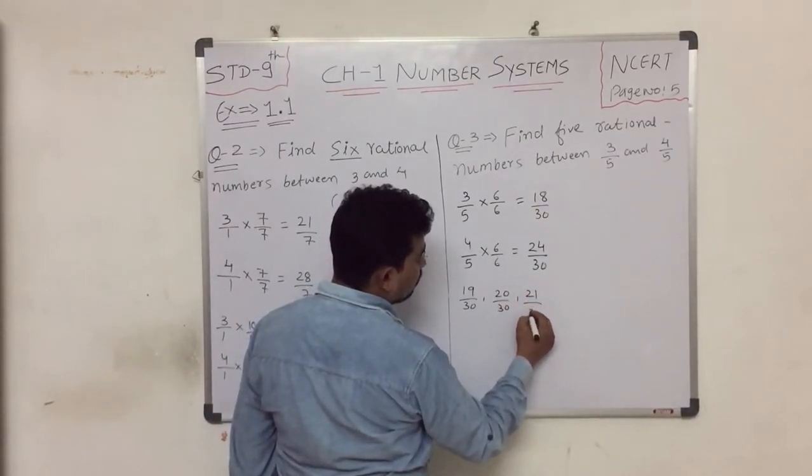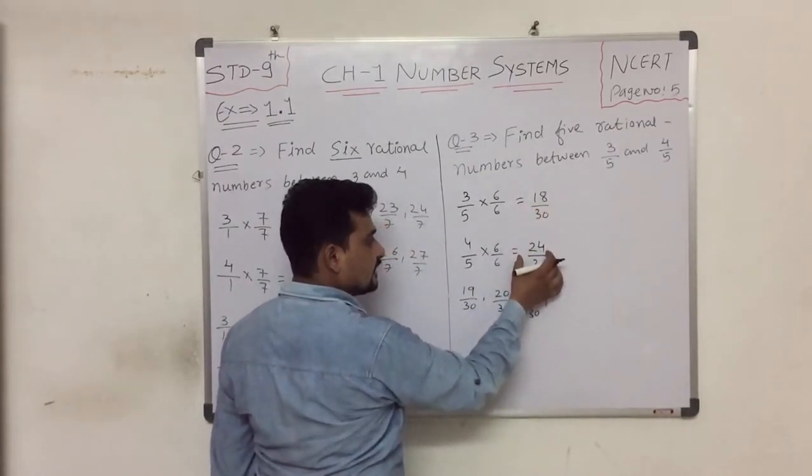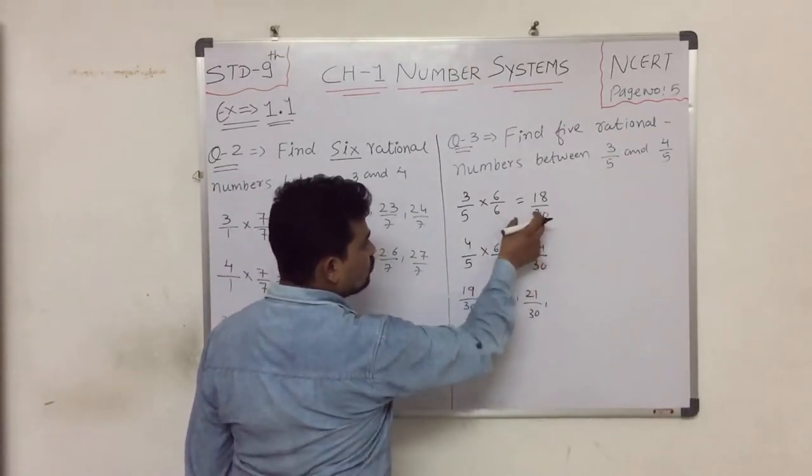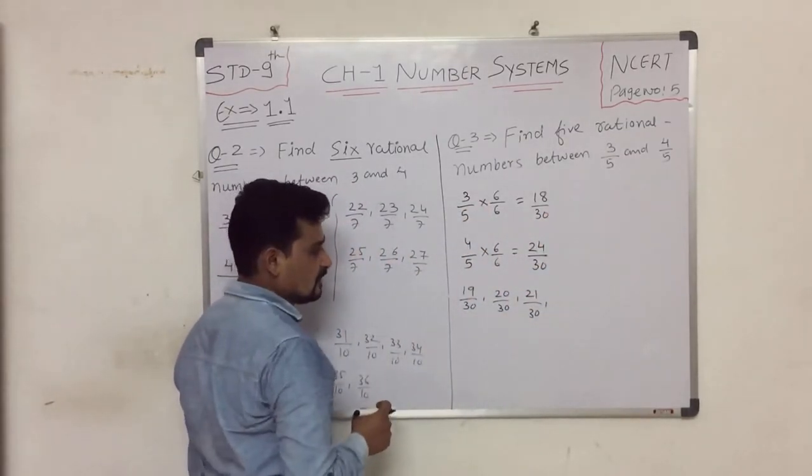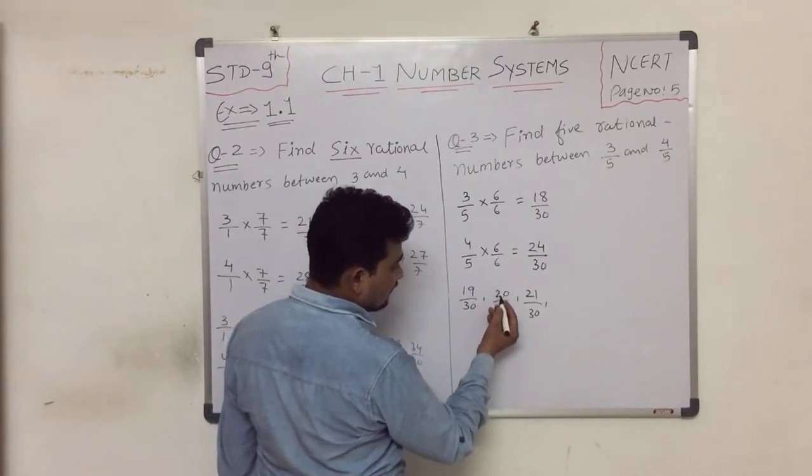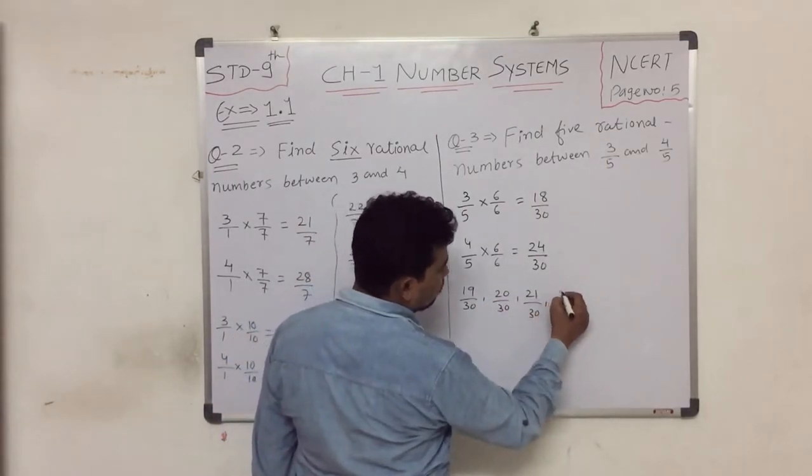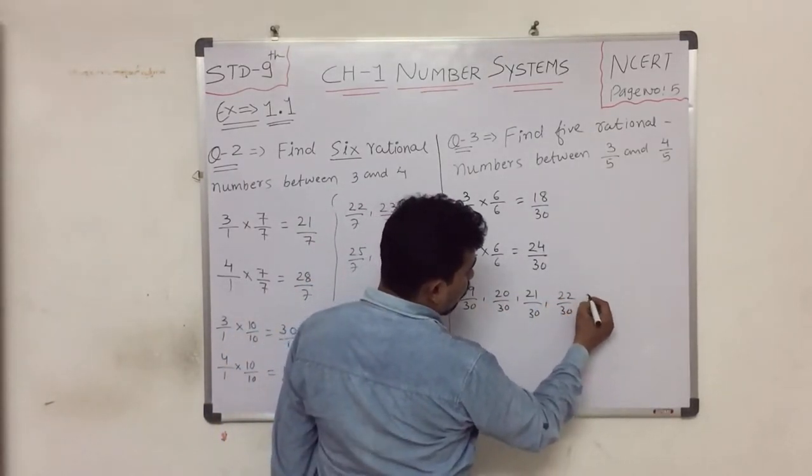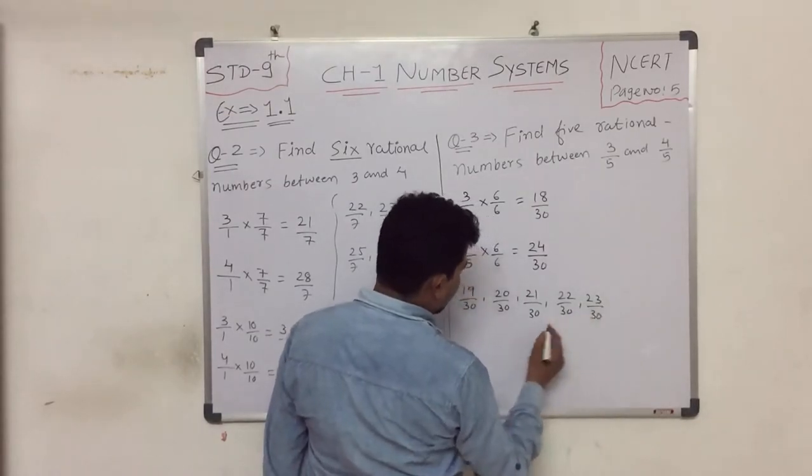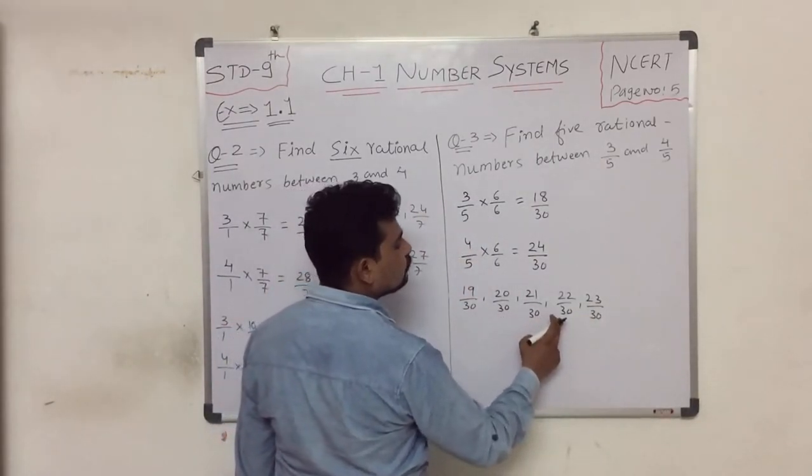Between 18/30 and 24/30, we can write: 19/30, 20/30, 21/30, 22/30, and 23/30. That's 1, 2, 3, 4, 5 rational numbers between 3/5 and 4/5.